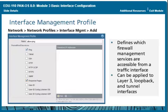Response pages enable a firewall to present information to users in response to their activity — for example, an interactive web page asking a user to verify a file transfer before the firewall allows it. You can assign an interface management profile to Layer 3 interfaces, sub-interfaces, and logical interfaces such as VLAN, loopback, and tunnel interfaces. If no profile is assigned, the firewall denies access to all management services. You can restrict management traffic to specific IP addresses by adding them to the Permitted IP Addresses field.